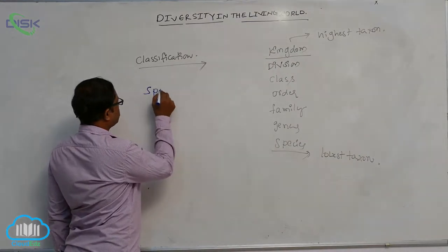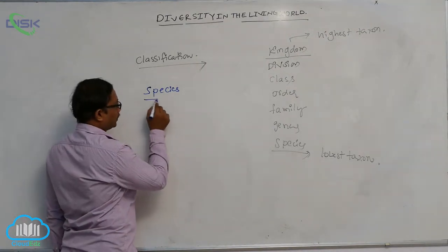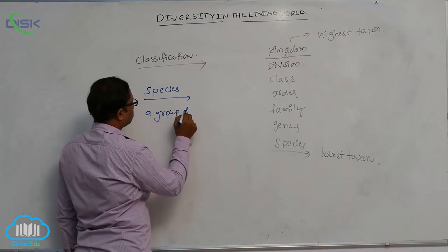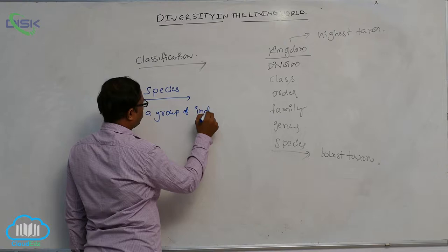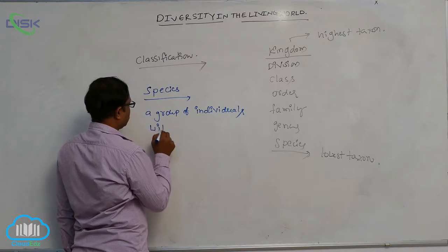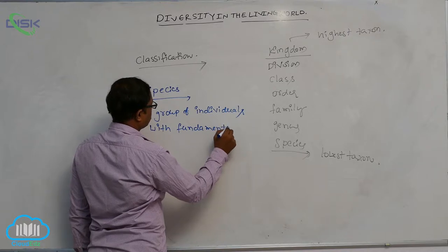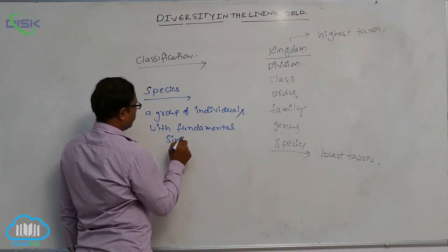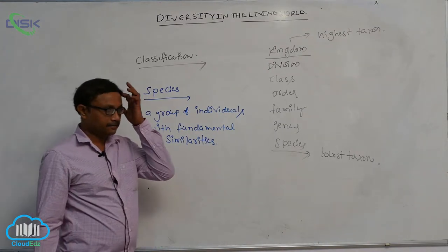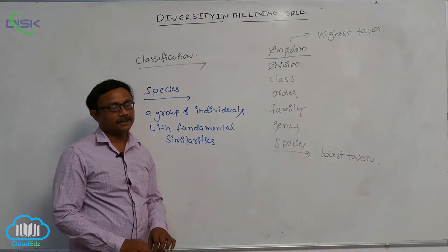First one is species. Species means what is the meaning? A group of individuals with fundamental similarities is known as the species. For example, we can easily identify that species. Different plants have different species.